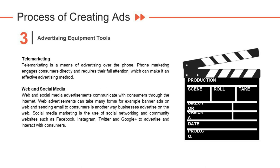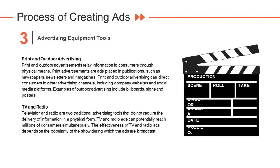Advertising equipment and tools include: telemarketing — advertising over the phone, which engages customers directly and can be an effective method. Web and social media — communicating with consumers through the internet, using banner ads, email, and social networking platforms such as Facebook, Instagram, Twitter, and Google Plus to advertise and interact with consumers. Print and outdoor advertising — relaying information through physical means such as newspapers, newsletters, magazines, billboards, signs, and posters, and can direct consumers to company websites and social media.